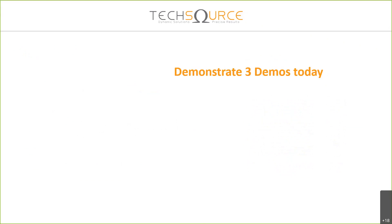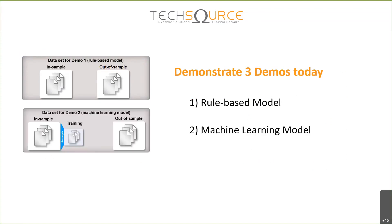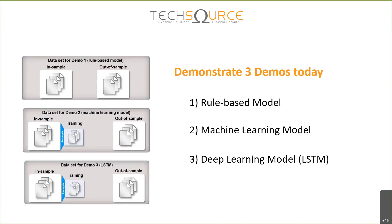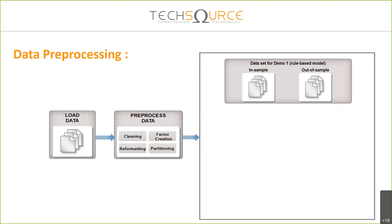Today we will demonstrate two approaches. First, I will demonstrate how to build a rule-based model, based on one technical indicator to decide whether to buy or sell the stock — specifically, RSI 14. The second approach is machine learning, where we use a machine learning method to train a model to predict buy and sell signals. The last one is the deep learning model, which is LSTM. LSTM is really good with sequential data like stock data. Before going into the approaches, we will work through data preprocessing first. In data preprocessing, we prepare the data for different approaches: screening, factor creation, reformatting, and partitioning the data into different datasets for each approach.